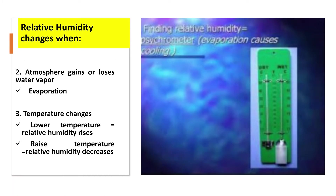Now let's understand the comparison of relative humidity versus temperature. As temperature increases, the rate of evaporation increases, which causes a decrease in humidity since water vapor is being converted into the gaseous state. So they are inversely proportional. At lower temperature, relative humidity rises, and at higher temperature, relative humidity decreases. Remember this as a thumb rule: humidity is inversely proportional to temperature.